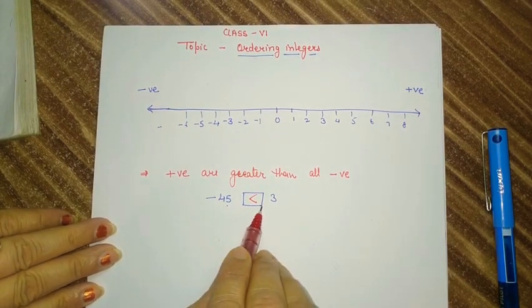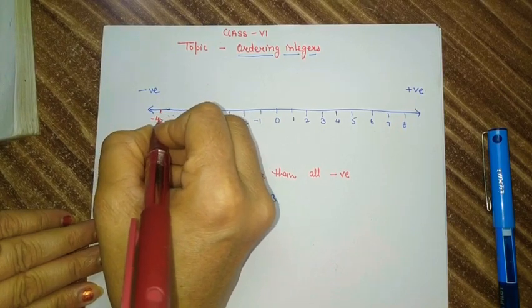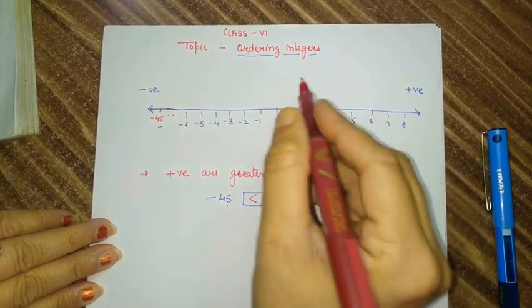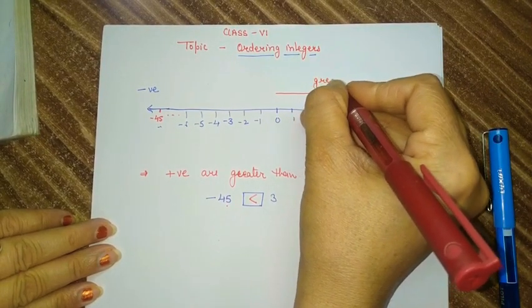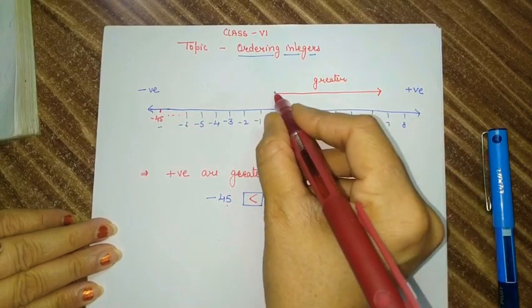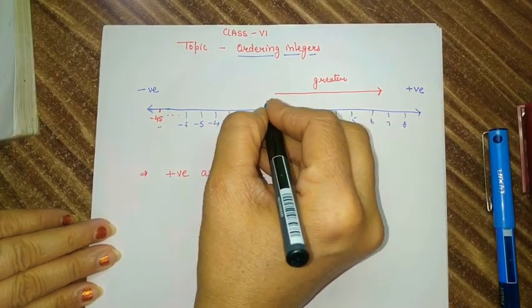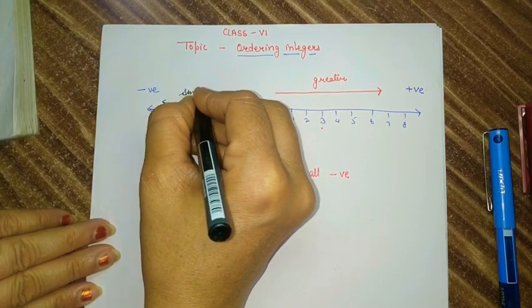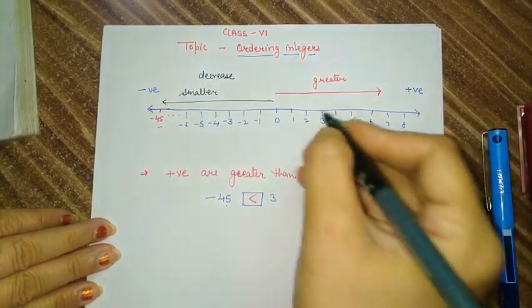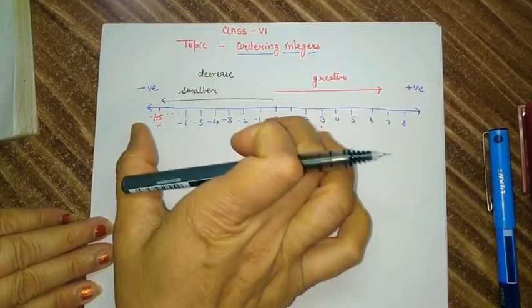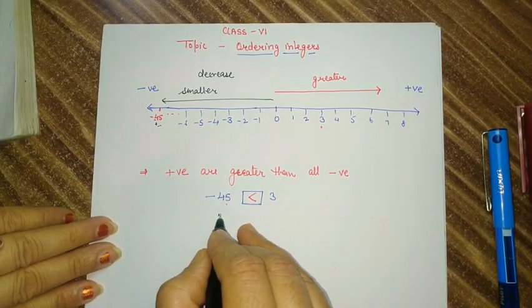I will explain this with the help of a number line. If we represent minus 45, it is here on minus 45, and here is 3. Whenever a number moves toward the right side, that number becomes greater and its value increases. If any number moves toward the left side from 0 to the negative side, the number becomes smaller and its value decreases. So minus 45 is so far from 0, that means minus 45's value decreases — that's why minus 45 is smaller than 3.